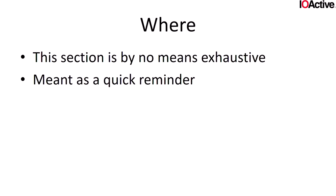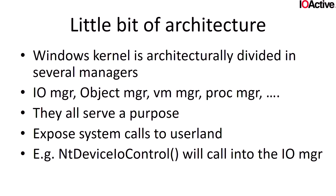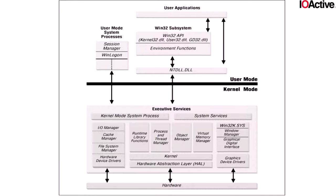This section is by no means exhaustive; it's a quick reminder and I'll move through it fast. Starting with a little architecture: at a high level, the Windows kernel is divided into managers that each have their own tasks. As a user, if you want to reach them, you call system calls and end up in one of these managers. For example, if you do a DeviceIoControl, you end up in the IO manager.